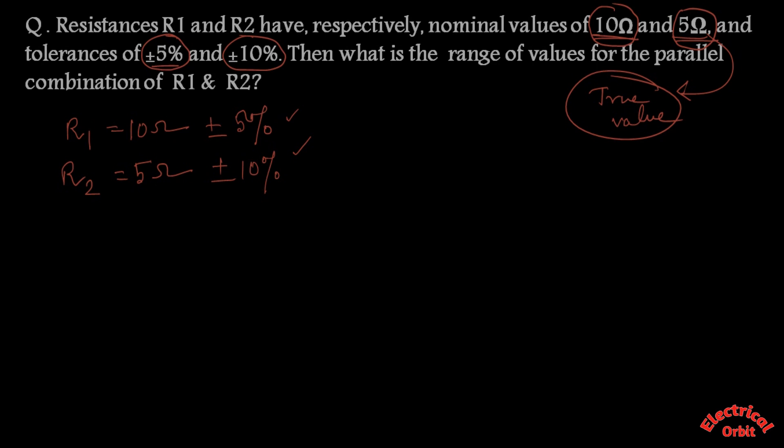Solving this kind of problem, first we need to determine what is the range of R1 and R2 we will get after our measurement. As R1 has 5% tolerance according to question, that means the value of R1 would be 10 plus minus 10 times 5 by 100...